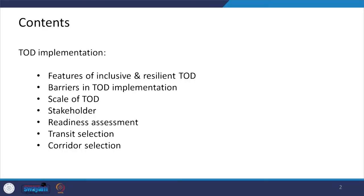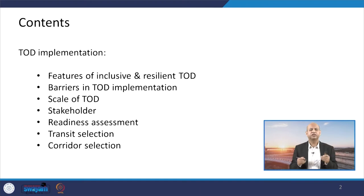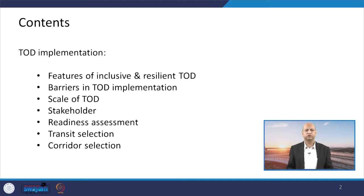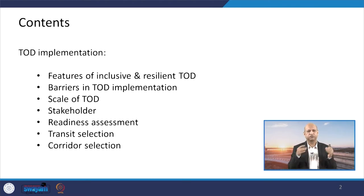To discuss various aspects of ground level implementation of transit oriented development, we will see features which are important for making the TOD inclusive and resilient, and what are the different barriers which we have to overcome when talking about implementation of TOD. Then different scales of TOD from city to urban areas and suburban areas.